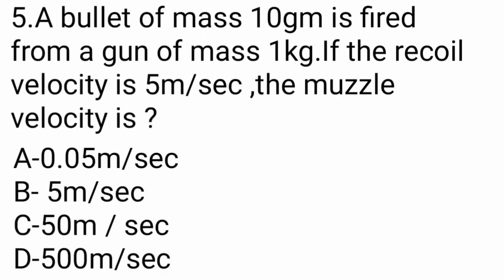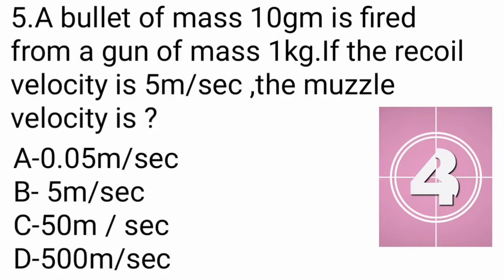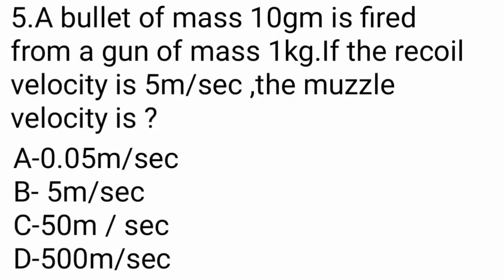Question number 5: A bullet of mass 100 grams is fired from a gun of mass 1 kg. If the recoil velocity is 5 meters per second, the muzzle velocity is — options: 0.05, 5, 50, or 500 meters per second. The answer is 500 meters per second.